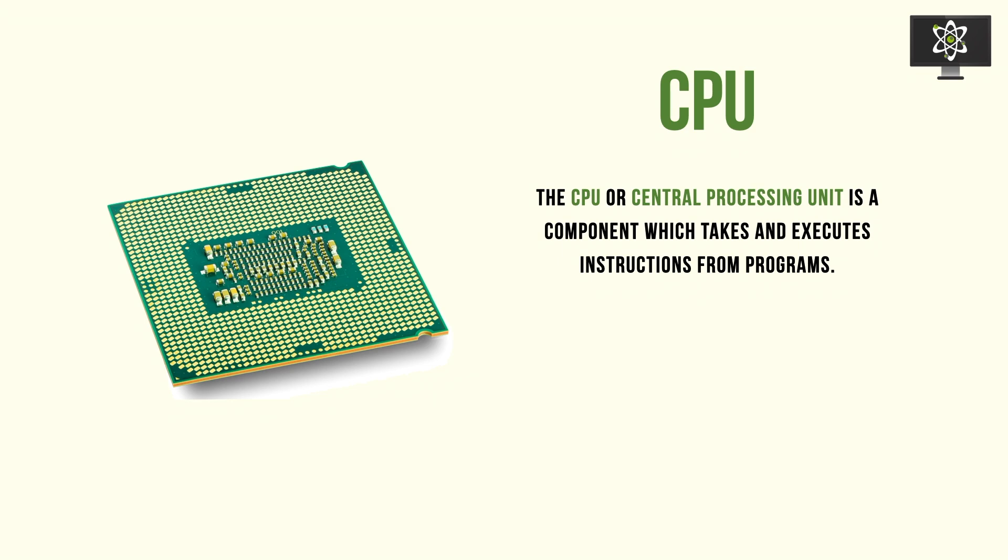The central processing unit, or CPU, is the hardware responsible for taking, interpreting, and executing instructions from programs. So it executes code.